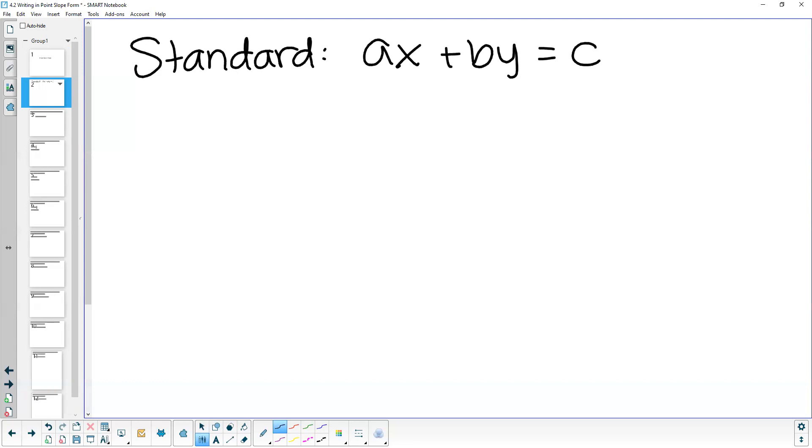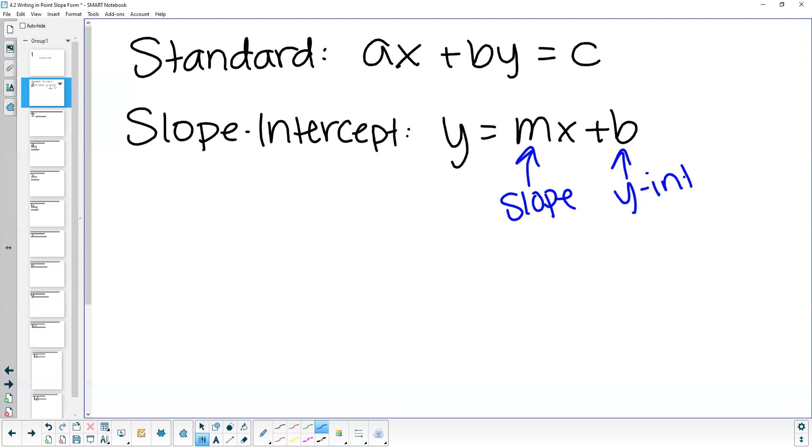That is standard form. Our next form is slope-intercept form. In slope-intercept form, we involve our slope and our intercept. We've got y equals mx plus b, and in this case, our m is our slope, and our b is our y-intercept. And this is super helpful when it comes to graphing because we can start at our y-intercept, and we can graph our slope from there, which is fantastic.